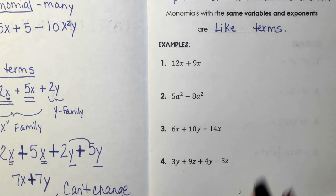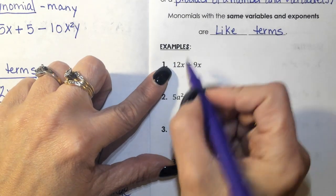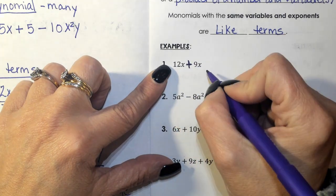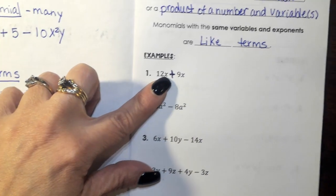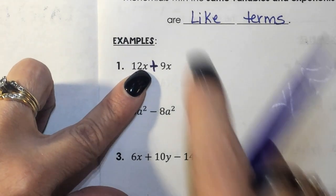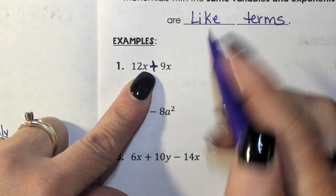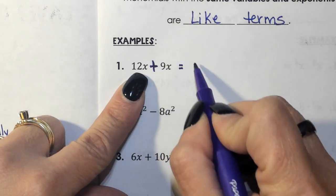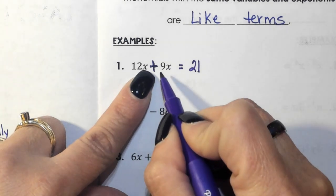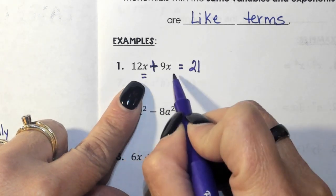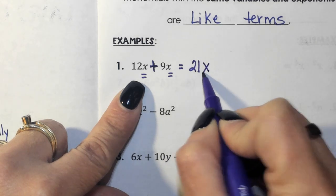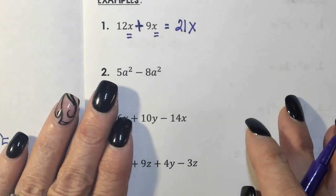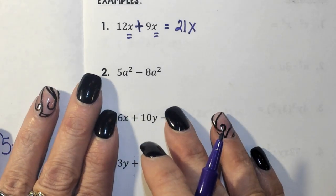So let's go over here and look at these examples. Number one: 12x plus 9x. Right off the bat, I notice there is a gigantic wall. The only way to go across the wall is if you are with your family. Well, they're both x's, so I can put those together. 12 plus 9 is 21. Don't change their last name — it's still the x family.